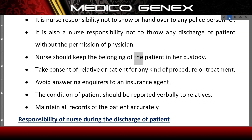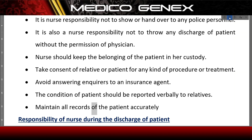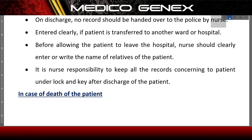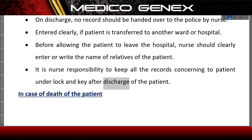The nurse should keep the belongings of the patient in her custody. Take consent from the relative or patient for any kind of procedure or treatment. Avoid answering enquiries from insurance agents. The condition of the patient should be reported verbally to relatives only. Maintain all records of the patient accurately. On discharge, no record should be handed over to the police by the nurse. If the patient is transferred to another ward or hospital, this should be clearly entered. Before allowing the patient to leave, the nurse should clearly record the name of relatives of the patient.